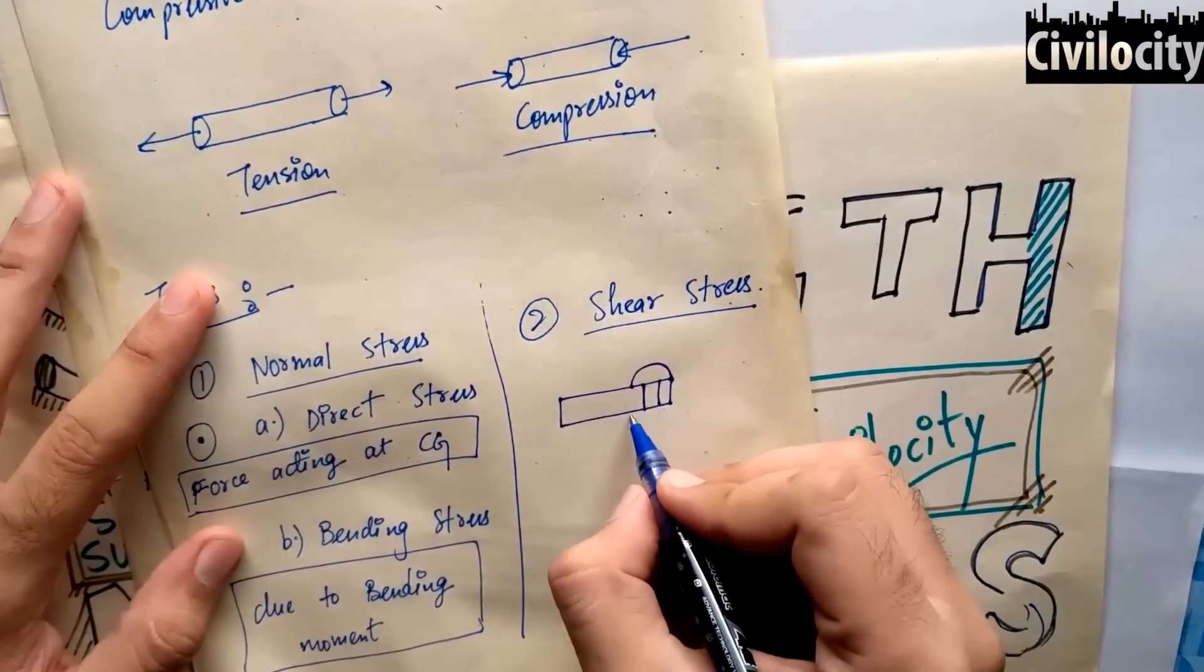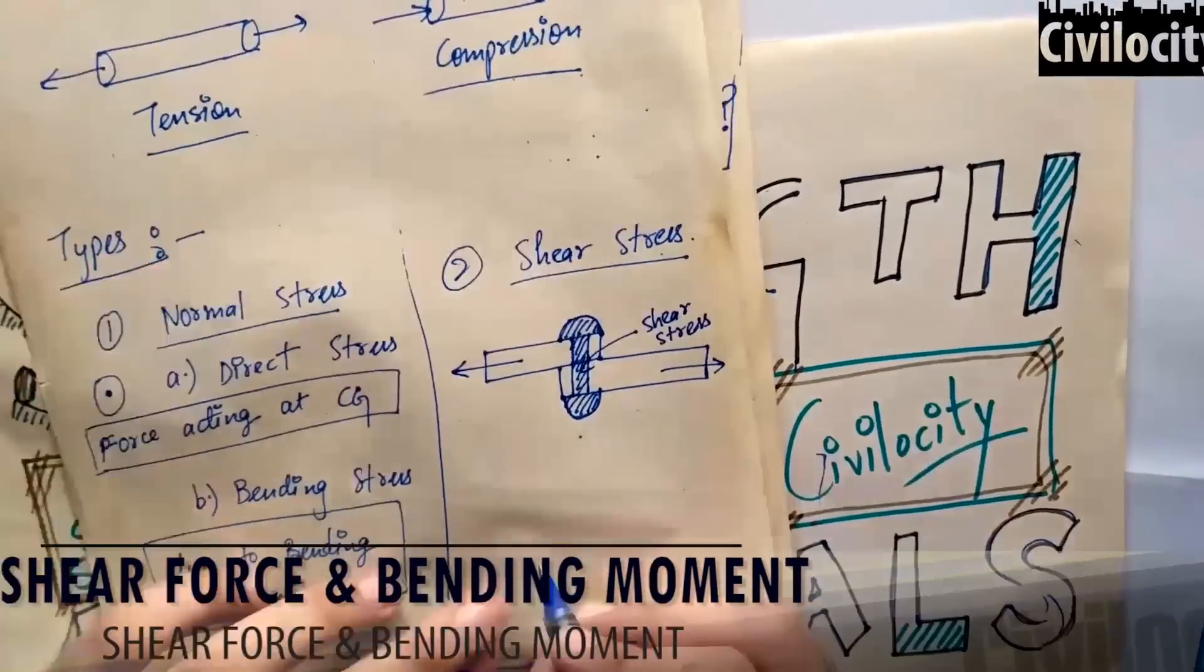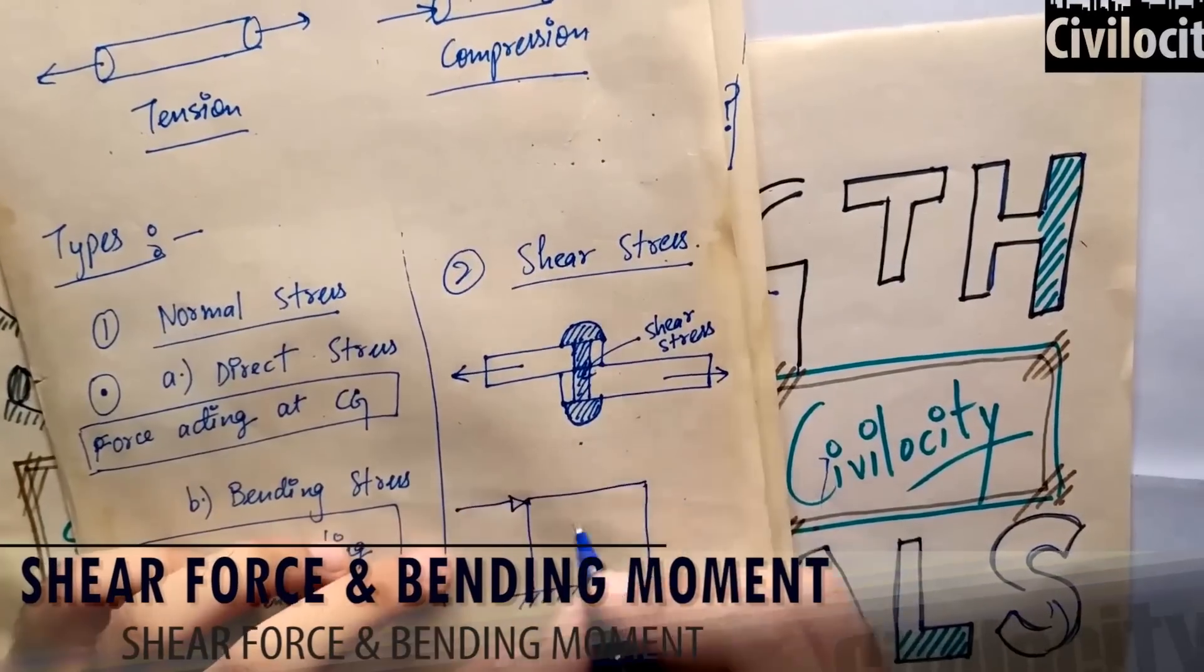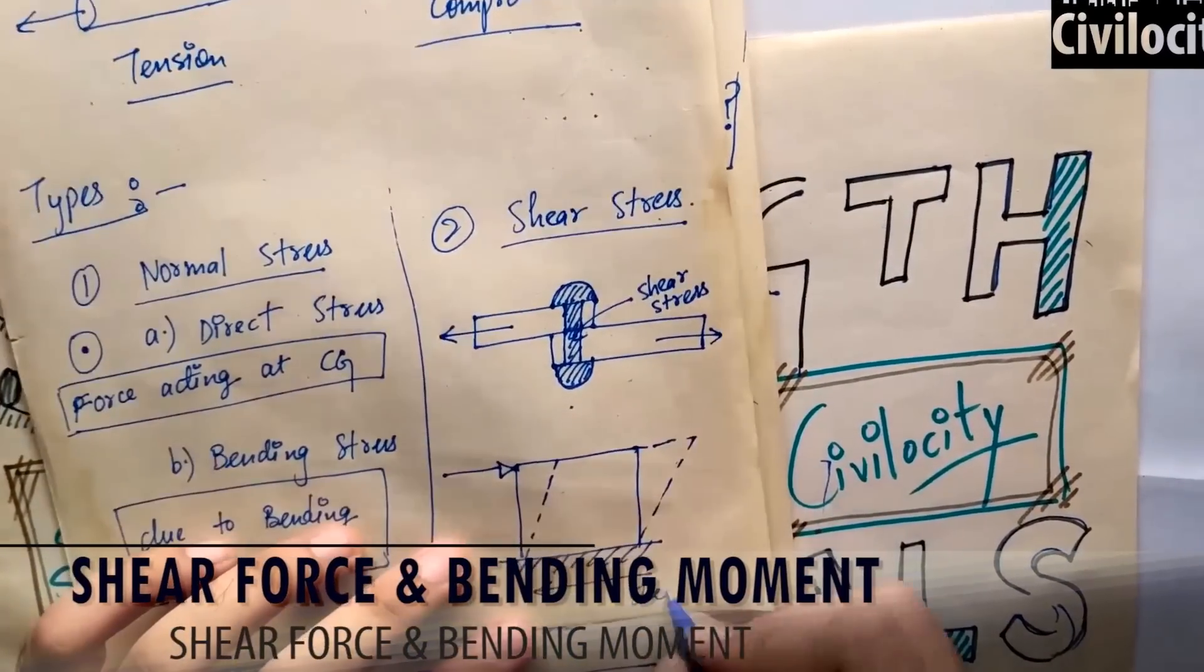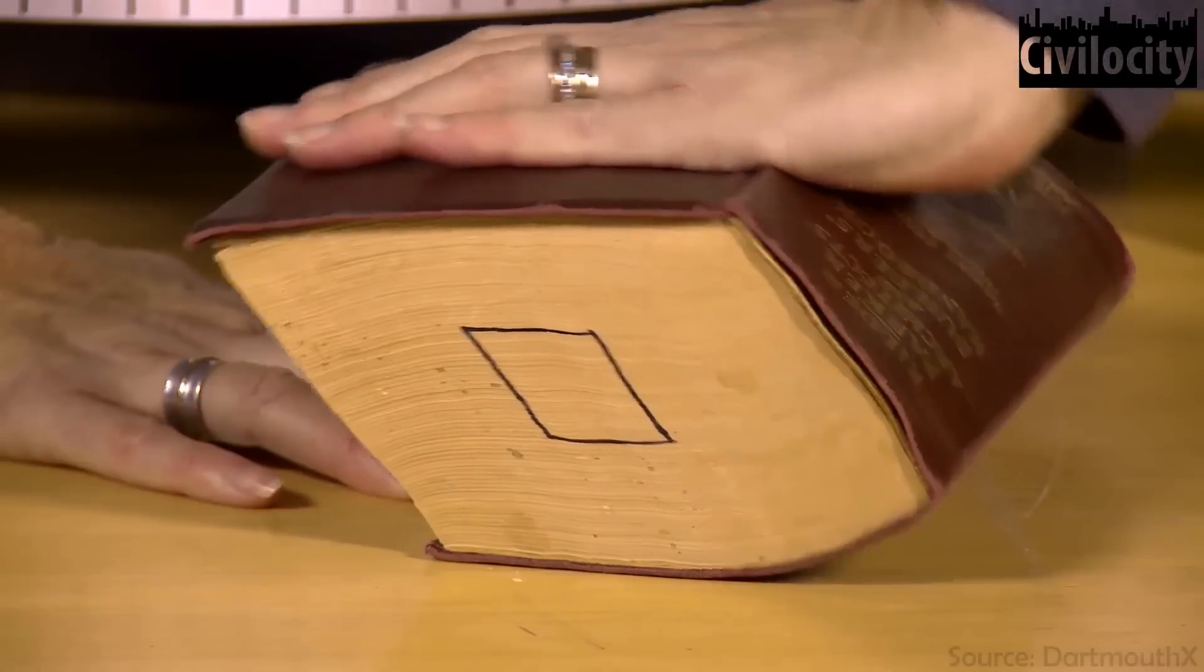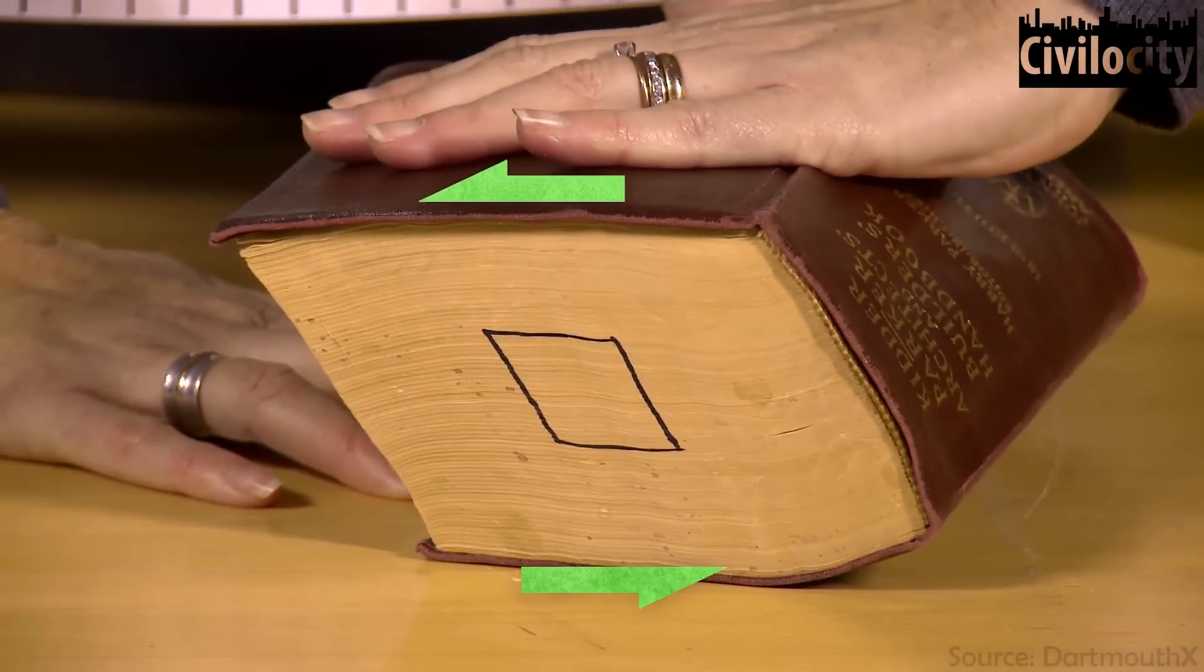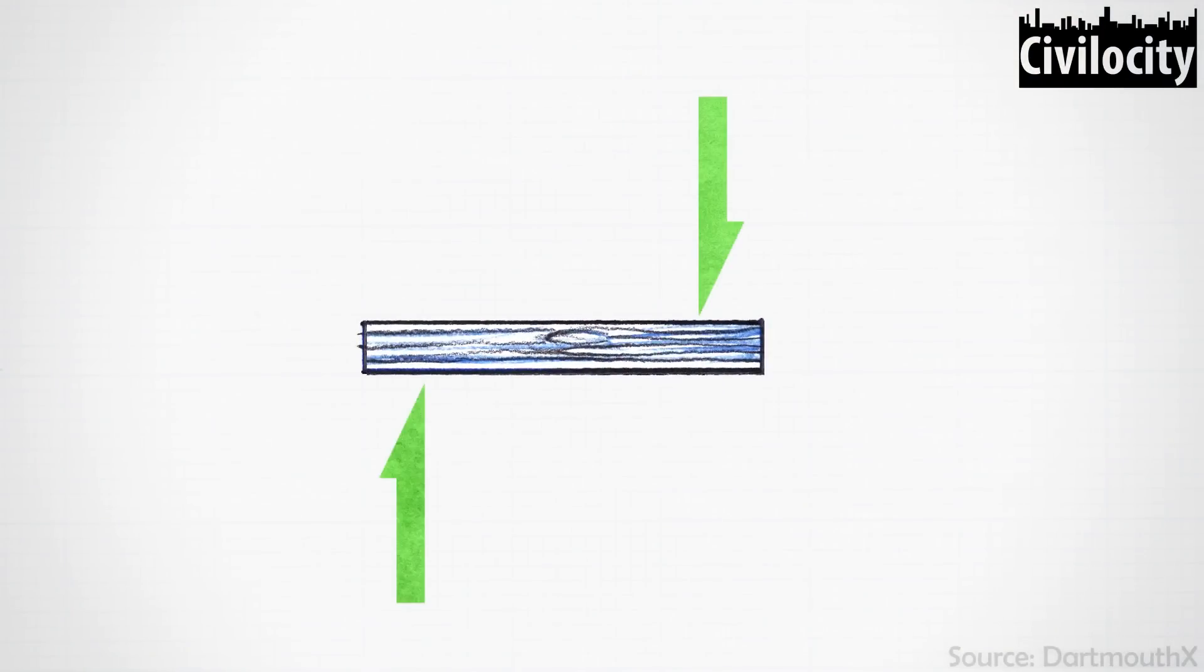Before talking about shear force, we talk about shear stress. Where is shear stress produced? When two parallel forces act in a section, then we call it shear stress and we call it shear force. If we talk about beams, then shear force is the force that acts normally on the beam.